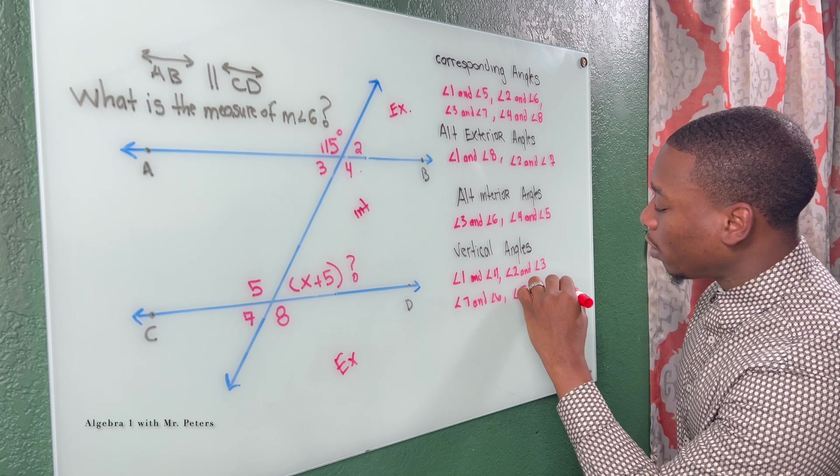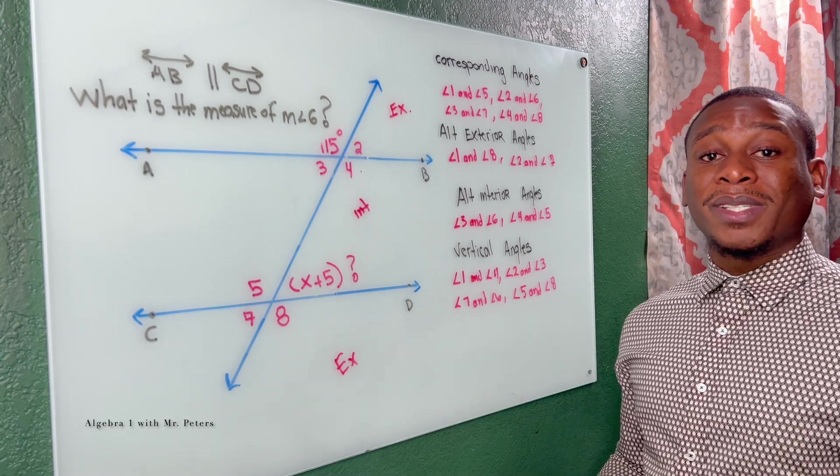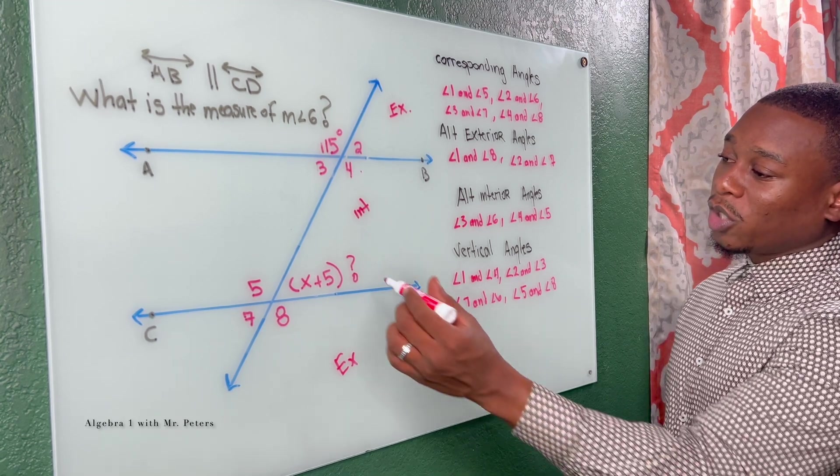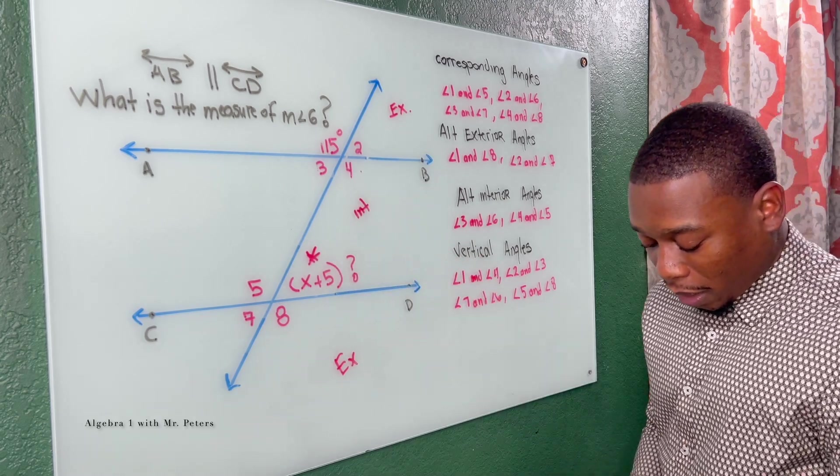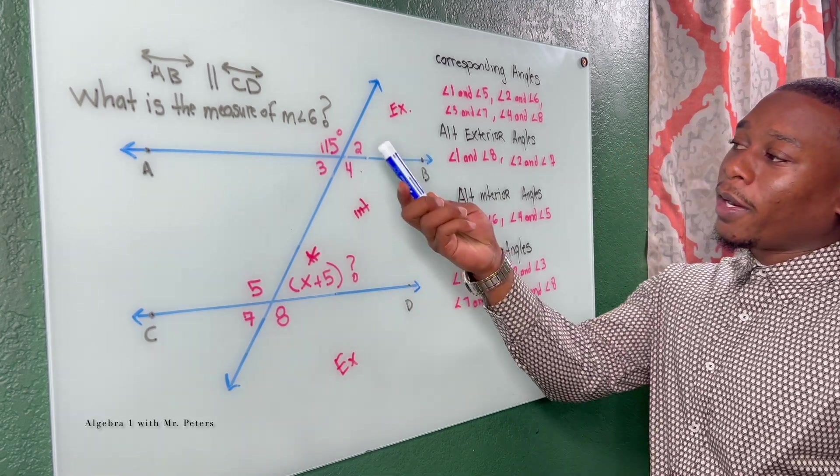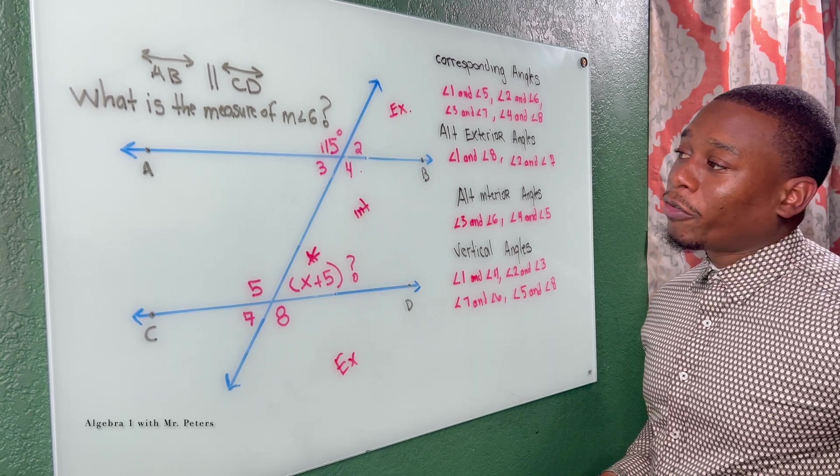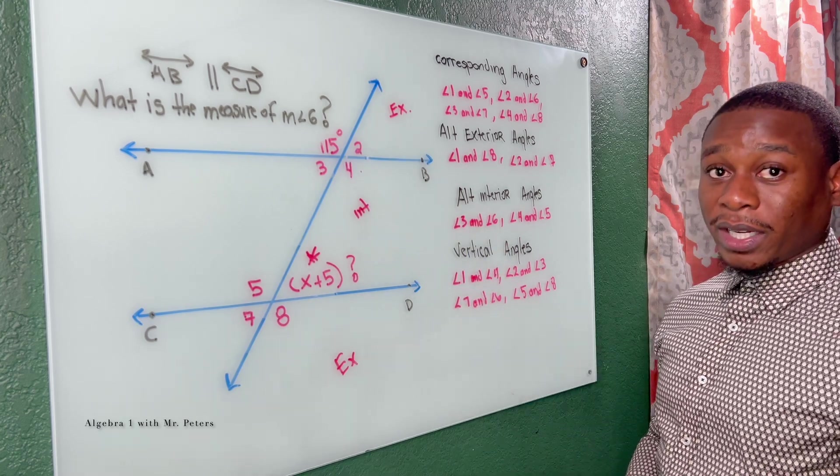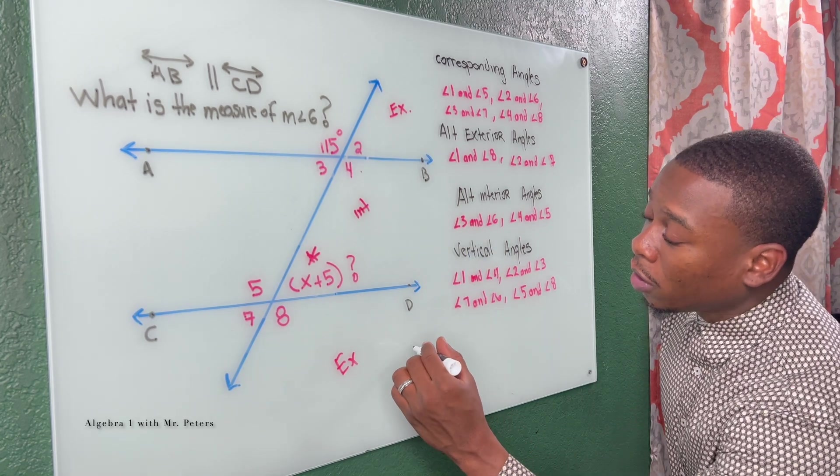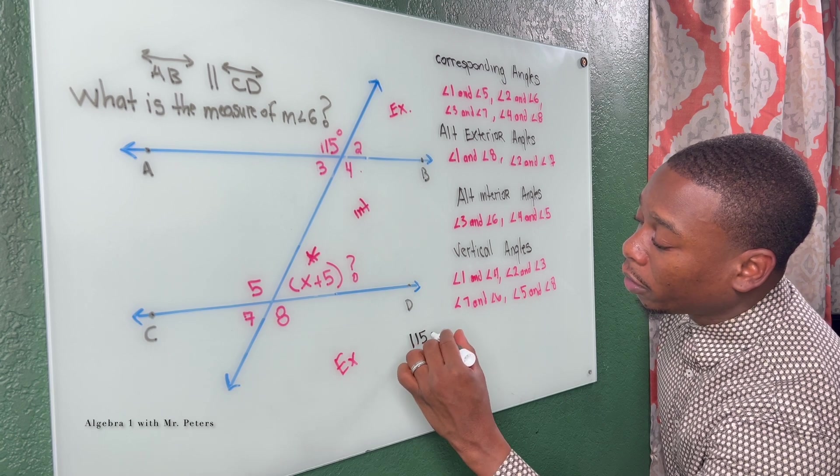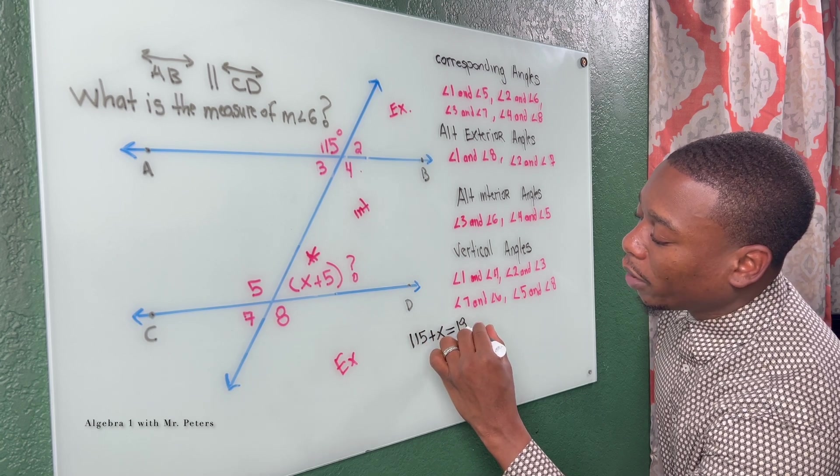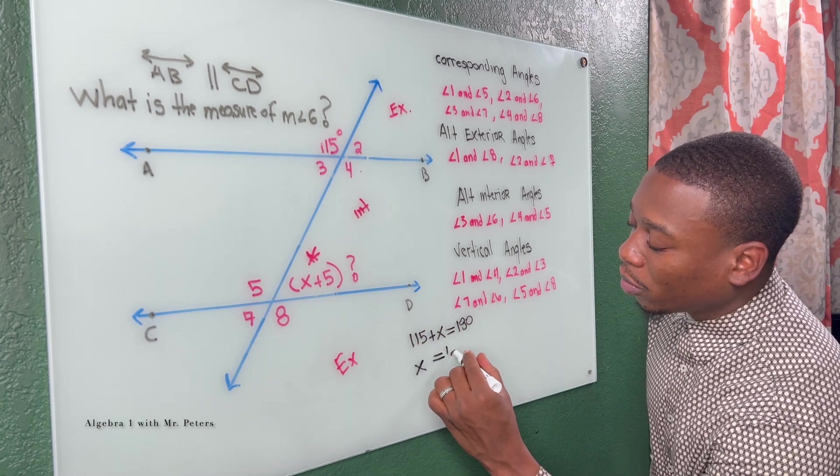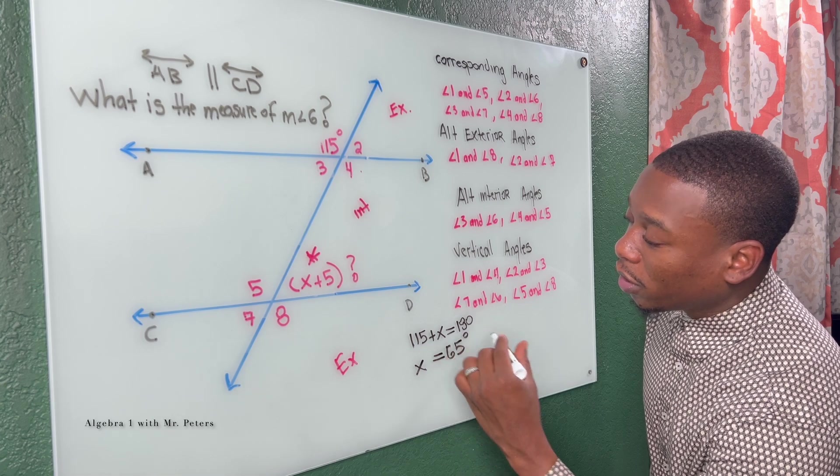So once you understand all of these, this topic becomes ten times easier, and you don't have to do as much work. So now what we're trying to do is we want to find this angle right here. And the best way to do this is to find angle two. And the way we want to find angle two is just remember that when we add angle one and angle two, that's a straight line, meaning it equals 180 degrees. So I have 115 plus X is equal to 180. After I subtract 115 from both sides, I get X is equal to 65 degrees.